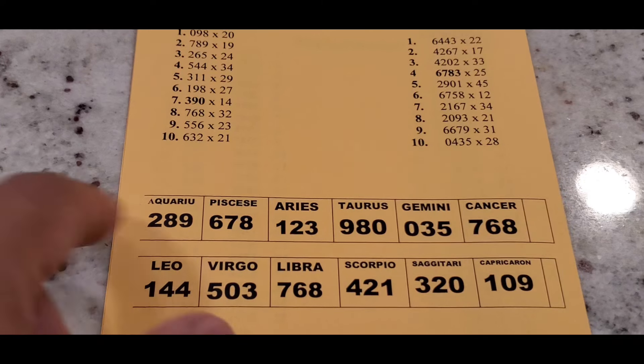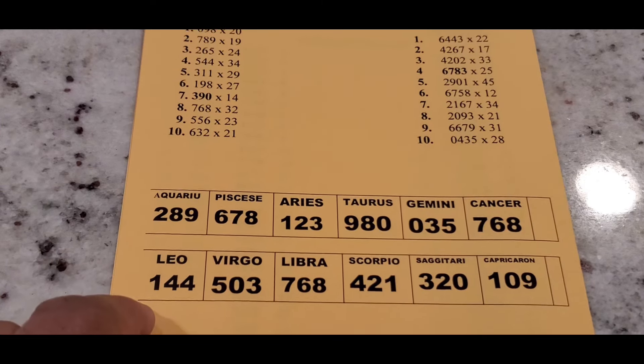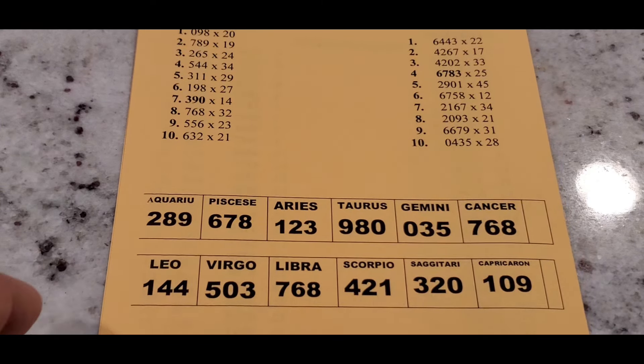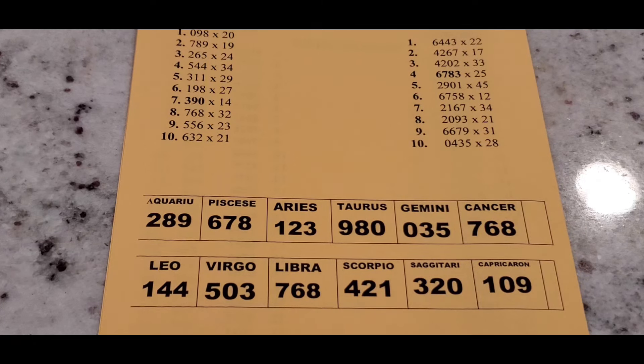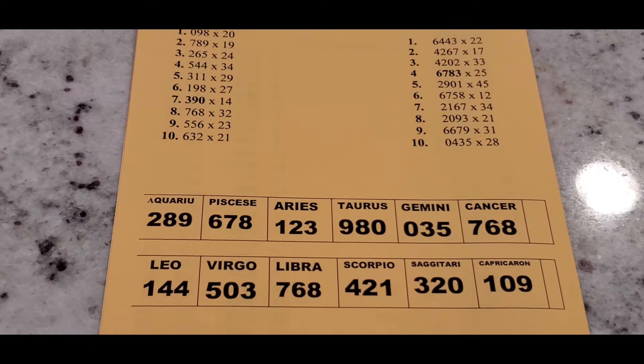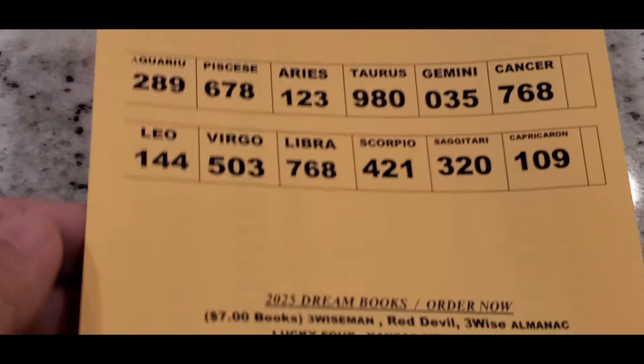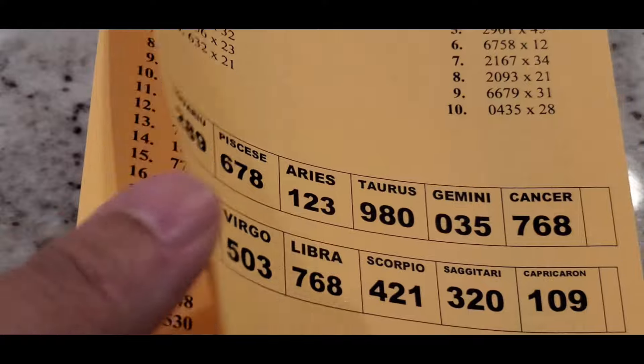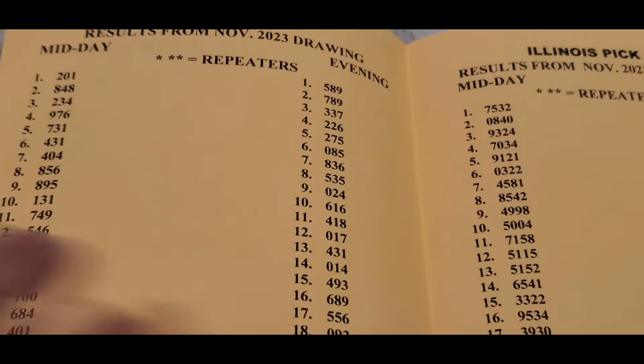Then moving on to this section right here, you have your horoscope numbers. So Aquarius 289, Leo 144, Pisces 678, Virgo 503, 768 for Libra, 123 for Aries, 980 for Taurus, Scorpio 421, Gemini 035, Sagittarius 320. And you have 768 on here again for Cancer, and then you have 109 for Capricorn.